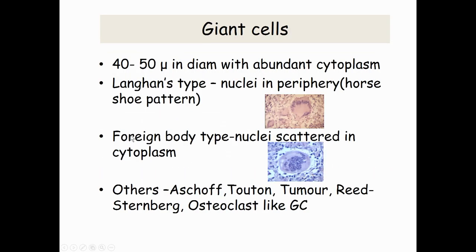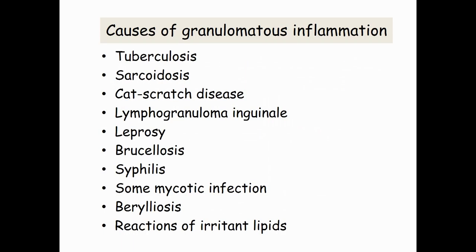There are two types of giant cells. In Langhans-type giant cells, the nuclei are arranged at the periphery, forming a horseshoe pattern. The other type is the foreign body type, where nuclei are scattered in the cytoplasm. Other types of giant cells include Aschoff giant cells, Touton giant cells, tumour giant cells, Warthin-Finkeldey, and osteoclast-like giant cells.